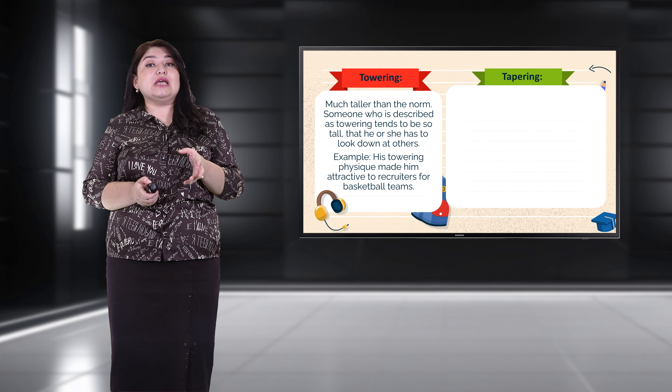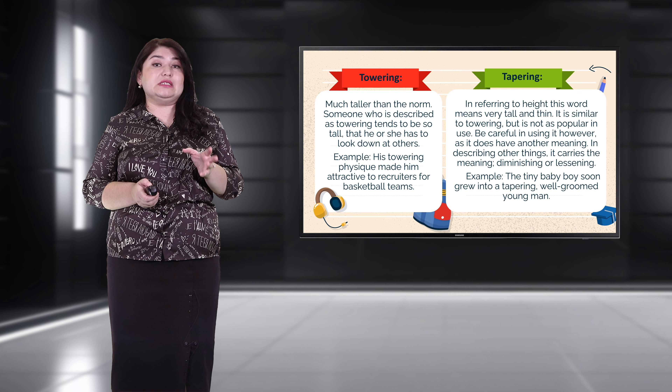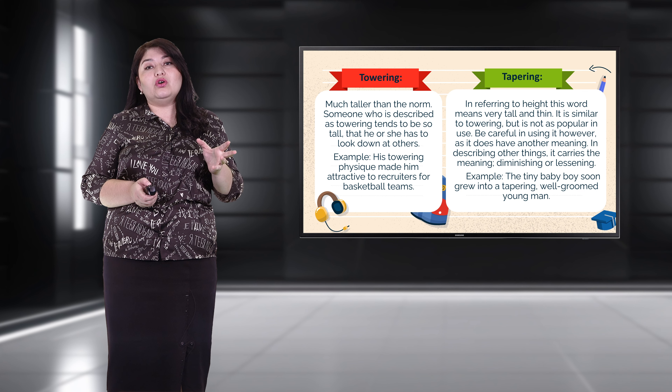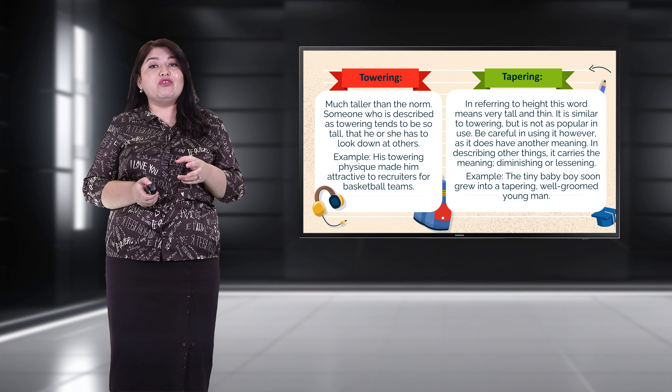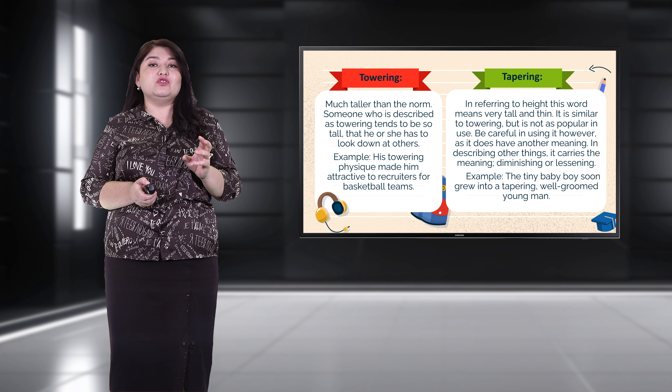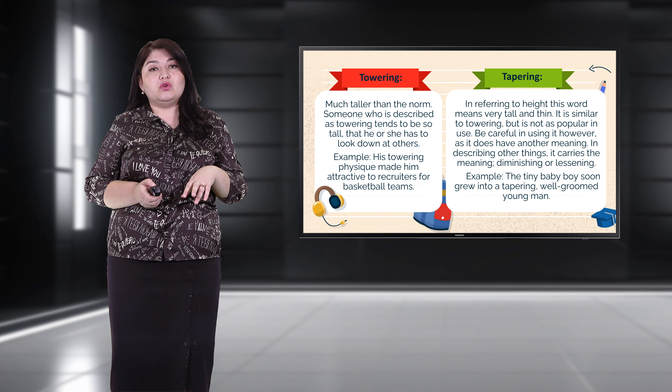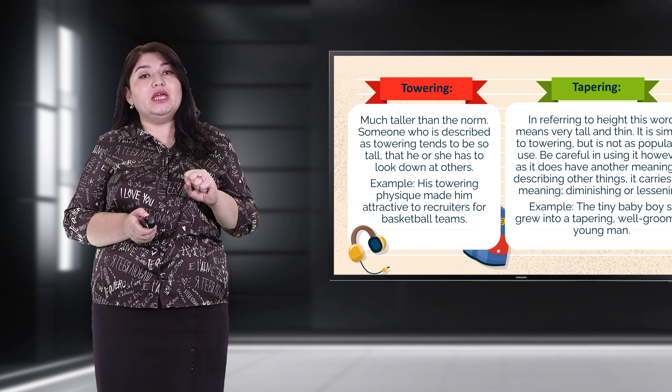Height: some height adjectives are unsuitable for description of people. However, below are some height adjectives appropriate for describing people. 'Towering' — much taller than the norm. Someone described as towering tends to be so tall that he or she has to look down at others. Example: 'His towering physique made him attractive to recruiters for basketball teams.' 'Tapering' — in referring to height, this word means very tall and thin, similar to 'towering' but less commonly used.